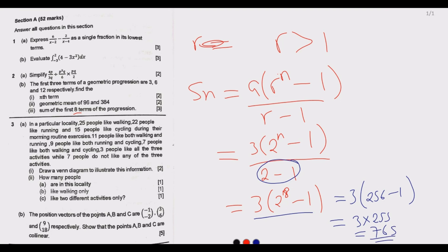So 765 is the sum of the first eight terms of this geometric progression. This is how you answer Question 2. Remember, geometric progression questions always involve finding the nth term and finding the sum — if you understand this, you can get seven or eight marks. Thank you for joining us today. Next time we will be looking at Question 3.